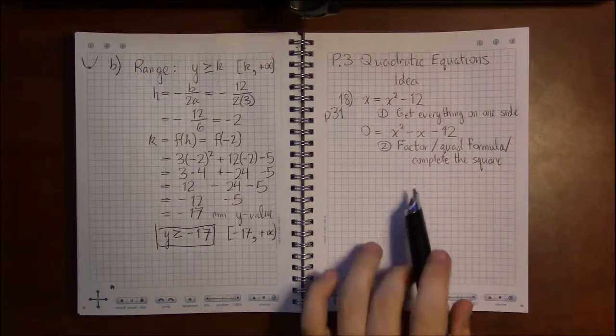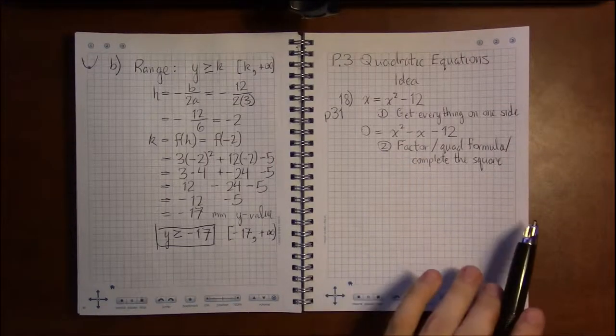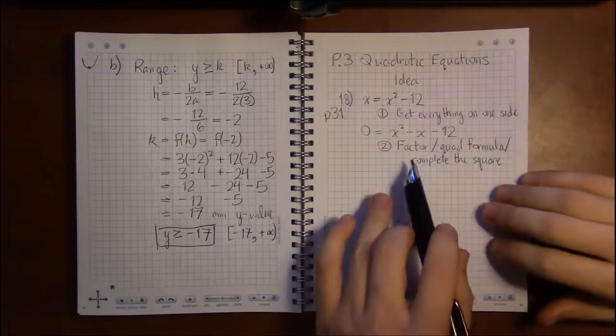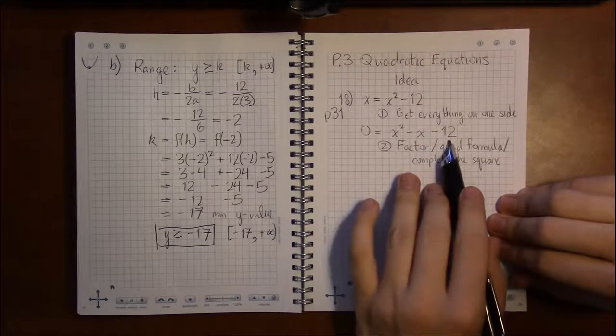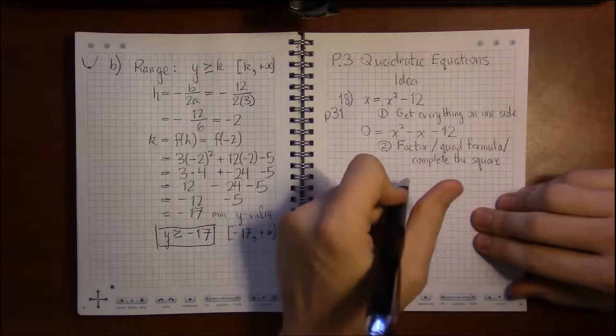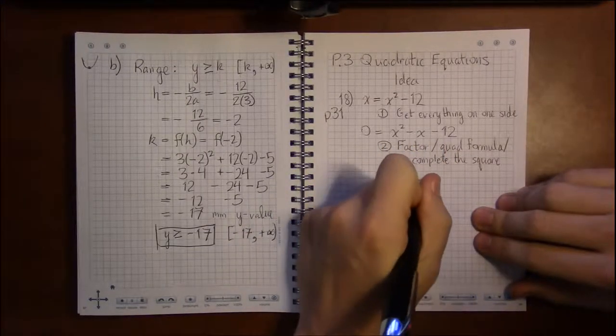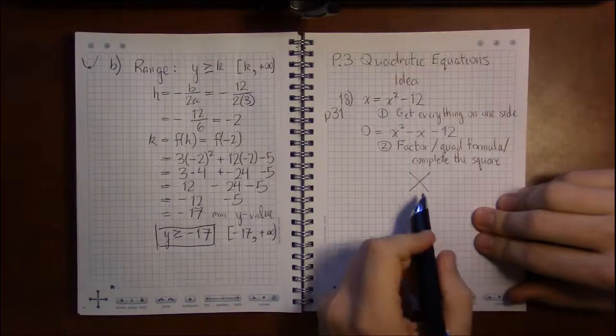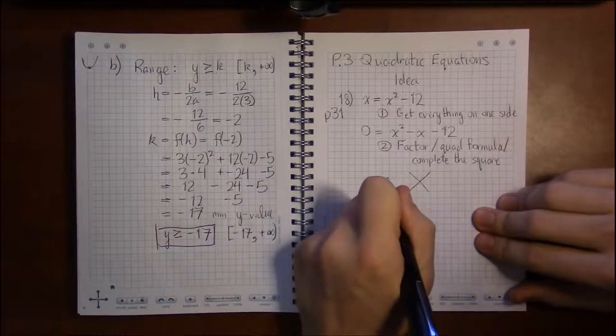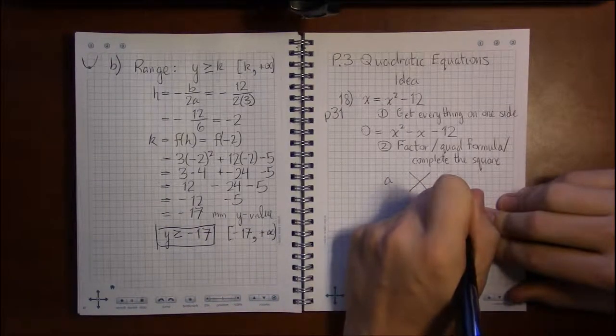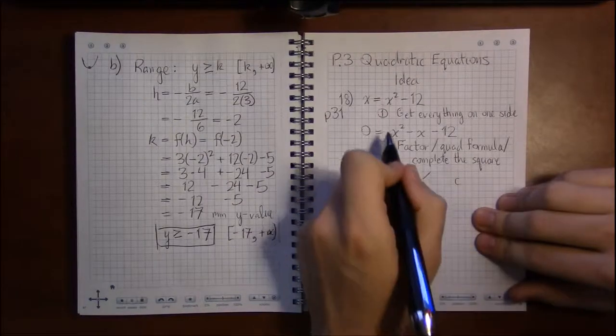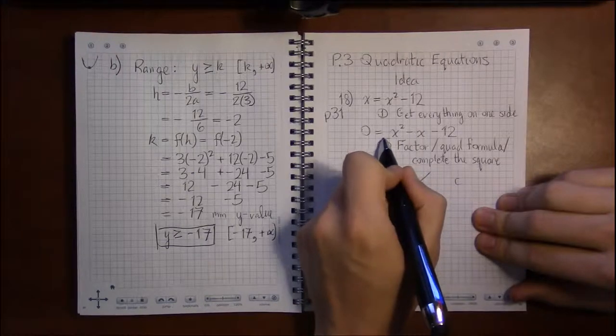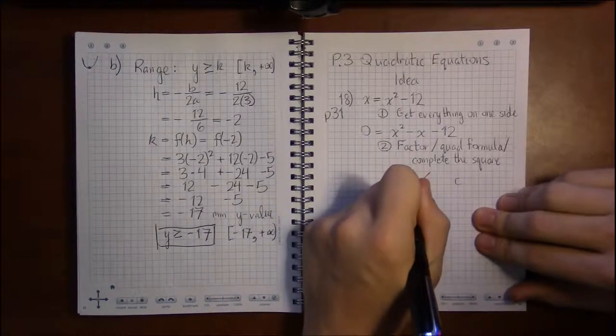There's a number of options available to us, but for now I'm going to focus on factoring. One thing I've seen people do when they factor an equation like this is draw out an X and put a and c out here on the left and right hand sides.